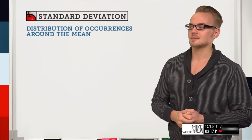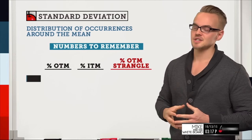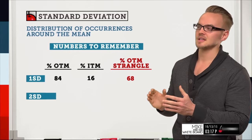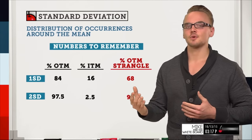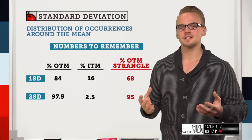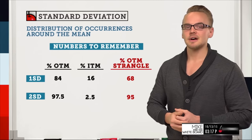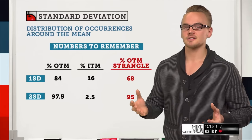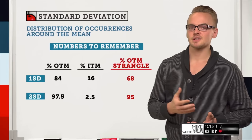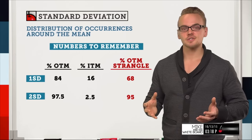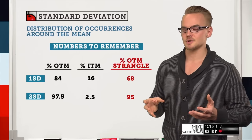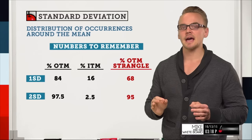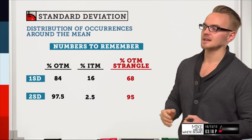Now let's talk about some numbers to remember — the cheat sheet I've been wanting to provide. I know a lot of these numbers can be confusing, but if you write them down and keep track, it'll be much easier when looking for certain strategies. I like to start with a one standard deviation option or range. The section with black numbers is looking at single options, and the section in red is looking at a strangle.